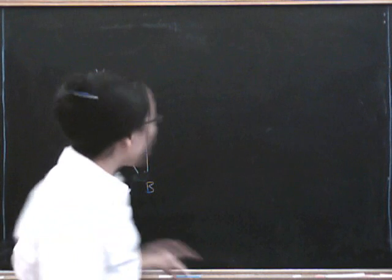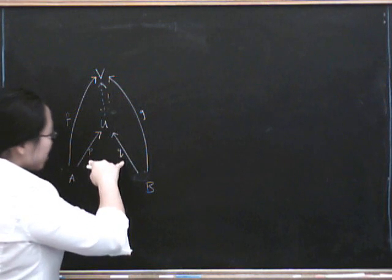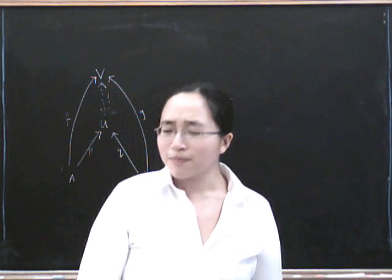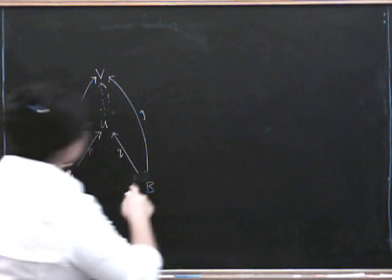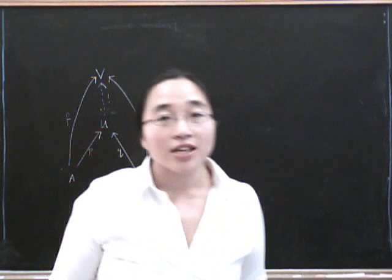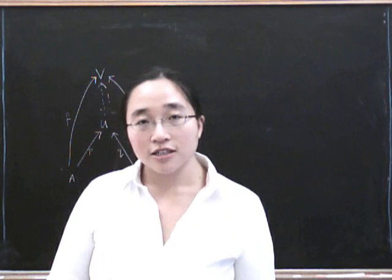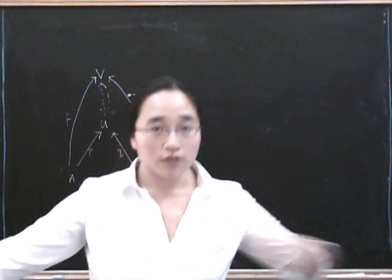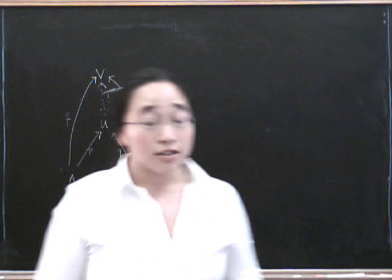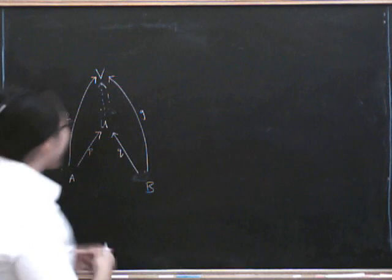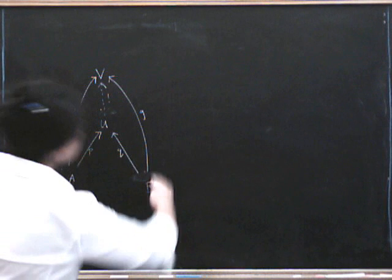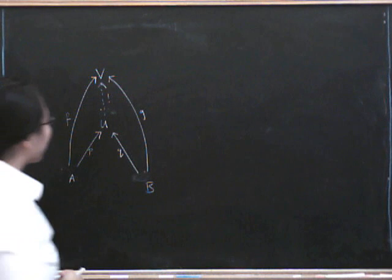A little point of terminology, when these were projection maps for the product, we called them projection maps. For the product, they went this way around, and we called them projection maps because of the analogy with Cartesian products, because they projected onto the first component and onto the second component. Now they're going this way around, we're going to see that they're insertion maps, because they insert A into the co-products, and this one inserts B into the co-products.